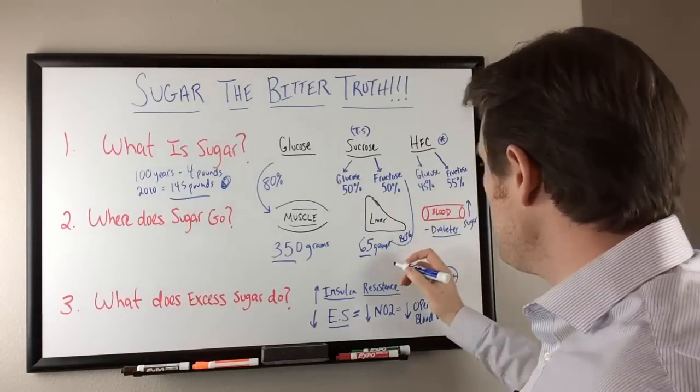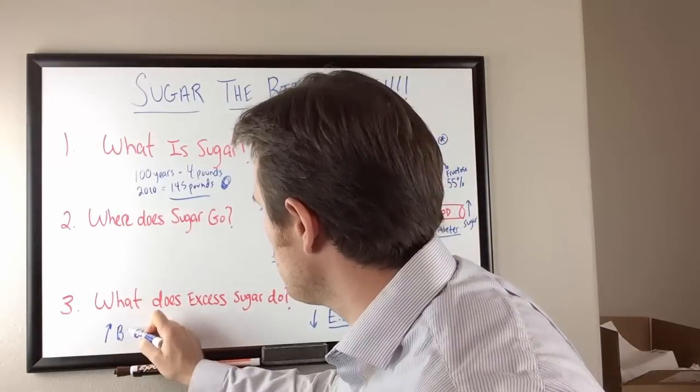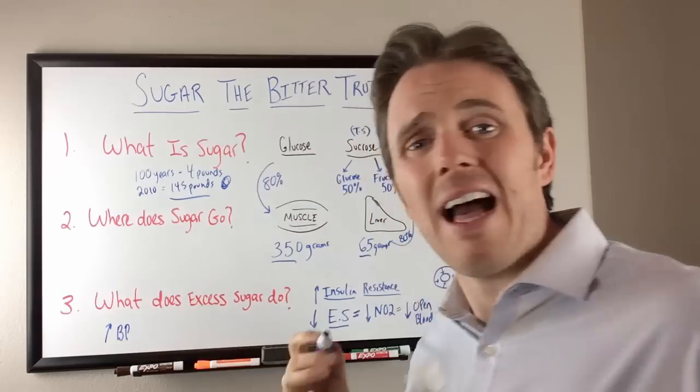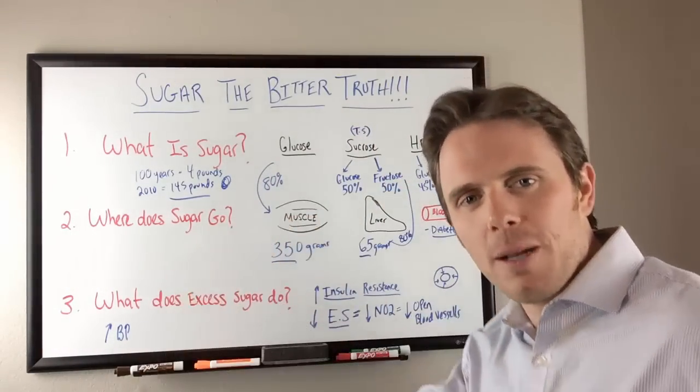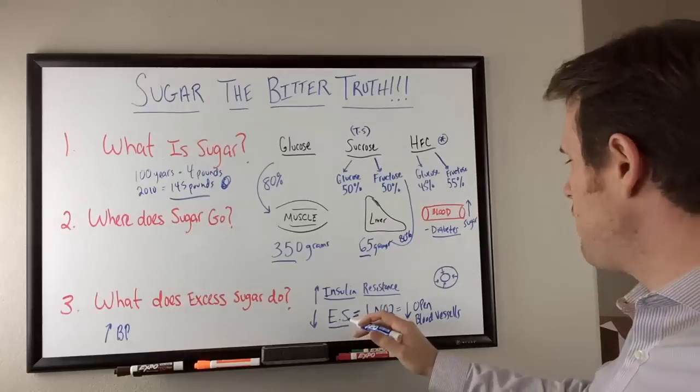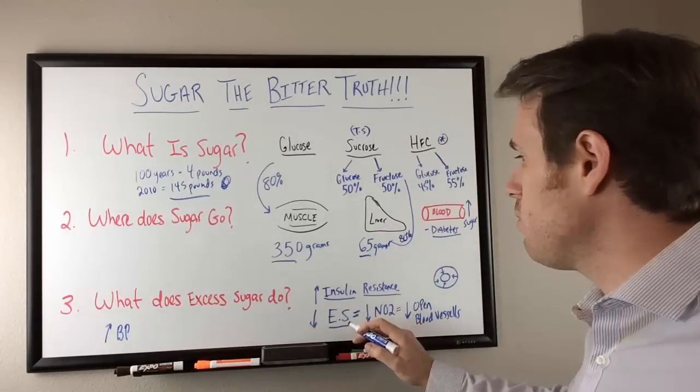So we're also going to see higher blood pressure as well. We're going to see an increase in blood pressure. And one of the other ways it does that, we have this compounding problem that keeps on compounding and getting worse and worse. We have insulin resistance, which down regulates endothelial synthase, which then creates decreased NO2, increased blood pressure.